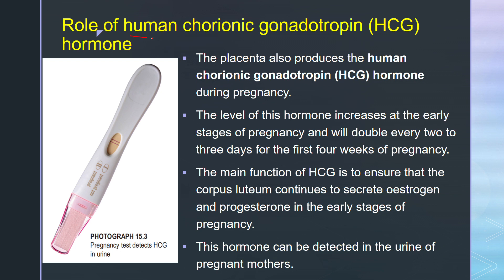Let's look into the role of human chorionic gonadotropin hormone, HCG. The placenta produces HCG during pregnancy. The level of this hormone increases at the early stages of pregnancy and it will double every two to three days for the first four weeks of pregnancy.